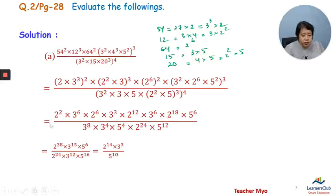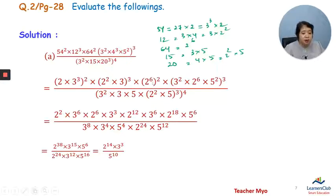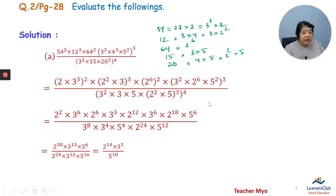2 squared, 3 to the power 6, 2 to the power 6, 3 to the power 3. It has 2 to the power 12, 3 to the power 2, 3 to the power 6, 2 to the power 6, 18 and 5 to the power 6.